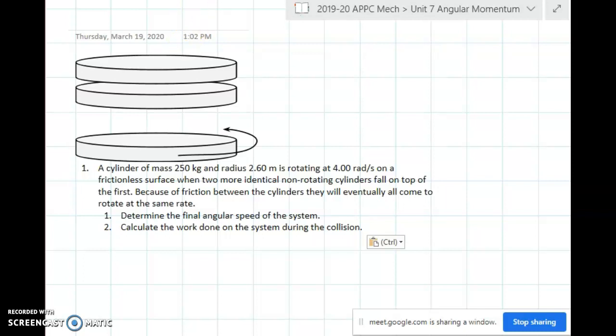Alright, let's see. We have the mass and the radius of the cylinders, we have the angular speed, and we're on a frictionless surface. Two or more identical non-rotating cylinders fall on top. So this surface I guess is what would be frictionless, or if this had a kind of like your lab how this thing was spinning and there was not a lot of anything acting on it to cause it to slow down.